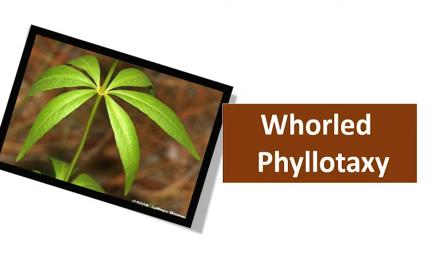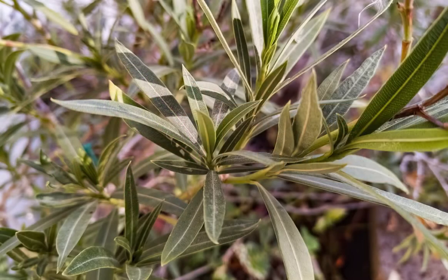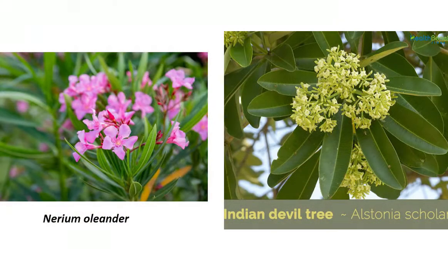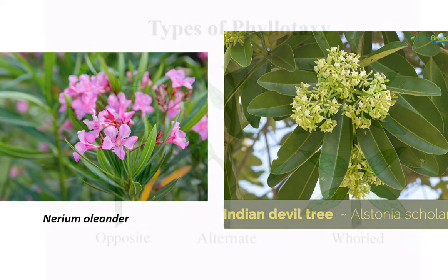Whorled Arrangement: In this type of arrangement, a set of three or more leaves grow from the same node. The set of leaves are at the same level and form a whorl, which means a circle. Some examples of plants with whorled arrangement of leaves are Nerium Oleander and Alstonia scholaris.